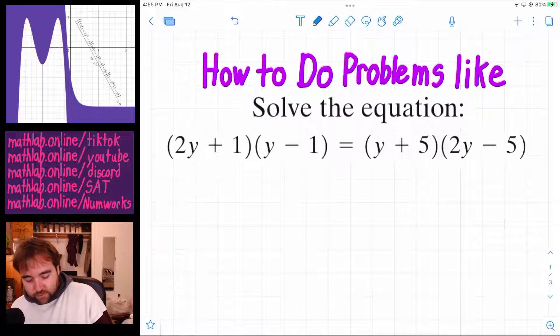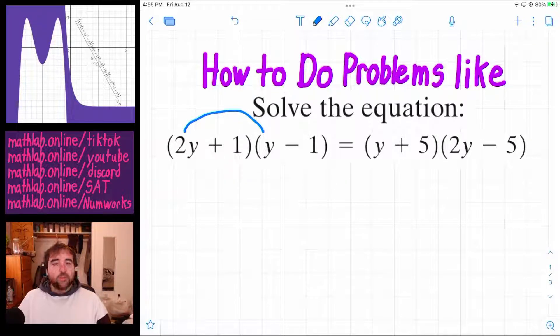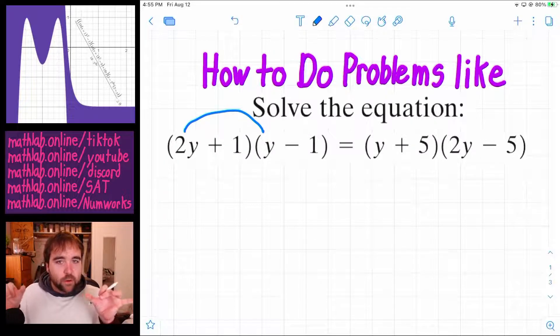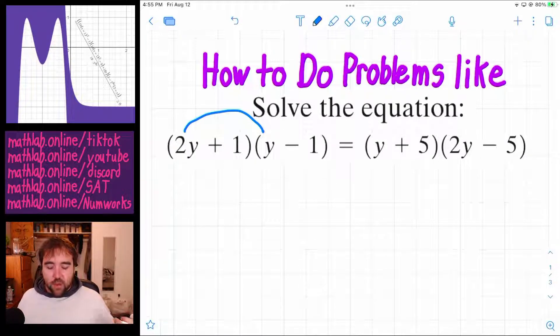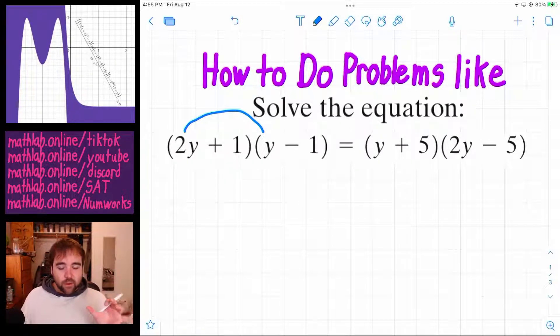Well, first off, what even is foiling? When you see anything in parentheses multiplied by something else in parentheses, and you just got a whole bunch of stuff added together in both of them, the way to think about that is you've got to multiply everything in the first parentheses by everything in the second parentheses.